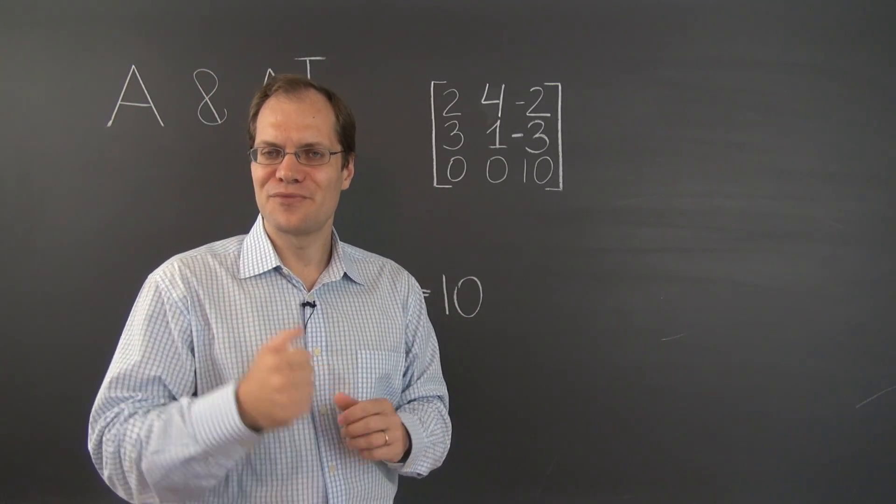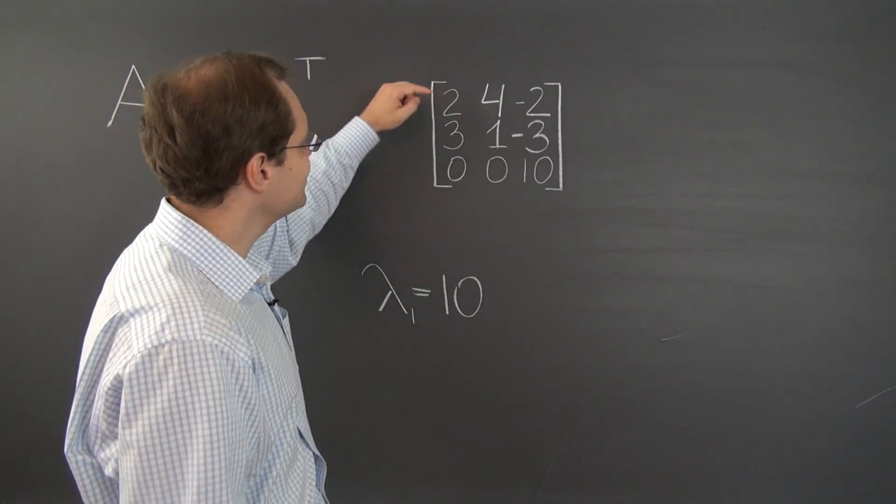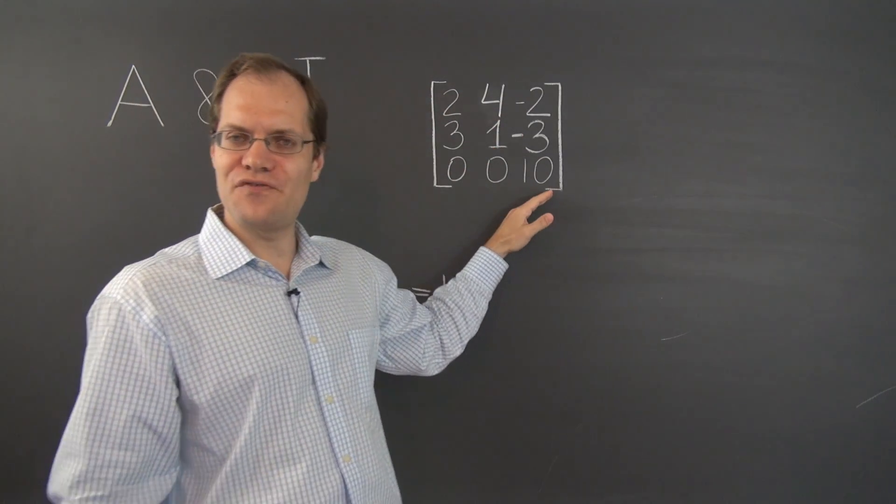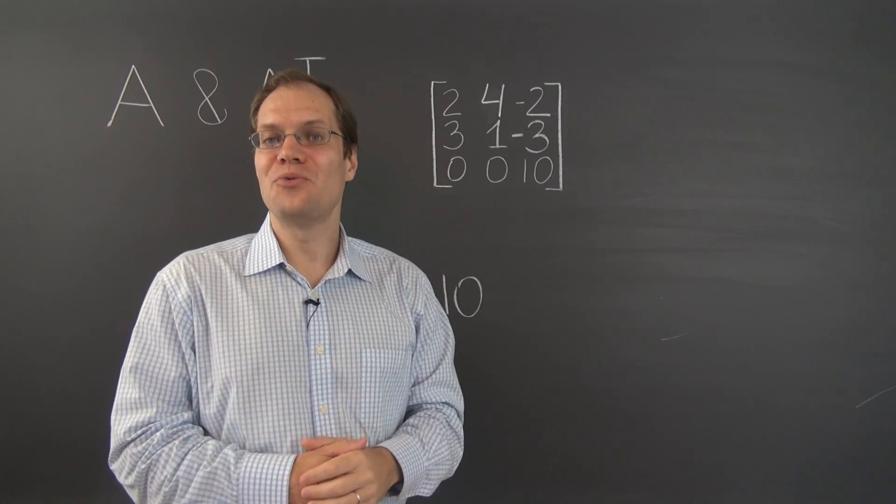What's another thing we notice? Well, another thing we notice is that now every column adds up to 5. Why is that relevant?